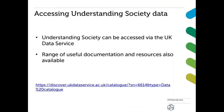The Understanding Society data can be accessed via the UK Data Service. You will need to be a registered user — registration is free and will give you access to the end user licence version of the data. If you want data with slightly lower levels of geography — the end user licence only goes down to government office region — you can apply for a special licence. If you're based at an Institute for Higher Education in the UK, you could apply for the secure access version, which contains the lowest levels of geography and some other more sensitive variables.